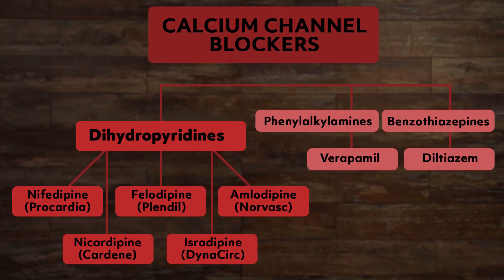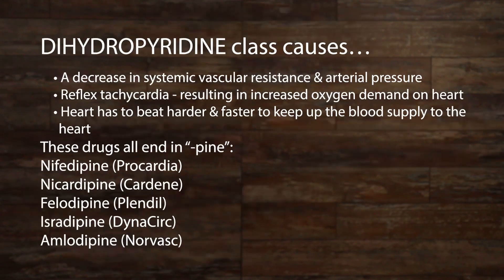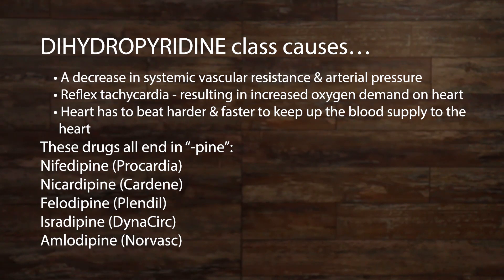There are three classes of calcium channel blockers: dihydropyridines, phenylalkylamines, and benzothiazepines. The last two are considered non-dihydropyridines. The dihydropyridine class is the most smooth muscle selective class of calcium channel blockers. They decrease the systemic vascular resistance and arterial pressure, and therefore are primarily used to treat hypertension.